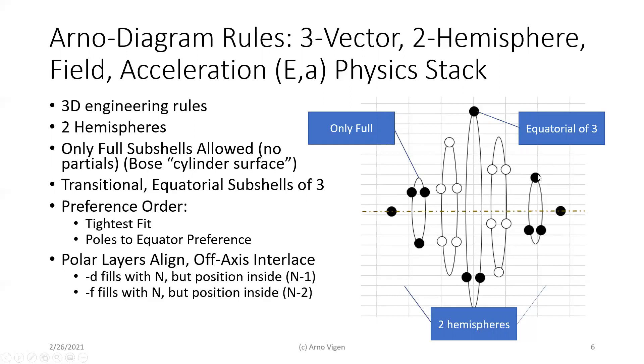So nice balance, no electrostatic, no magnetic action for that balancing. However, that means we have a rule that's different now than strict off-bau. And that is only full shells allowed. There are no partials in an Arno diagram. Specifically, this comes from Bose's cylinder surface logic. You can't have that statistical mechanics and quantum behavior unless you have electrons in a cylinder surface. And if it's not that full set, well, they'll just fall in and it won't follow that behavior.